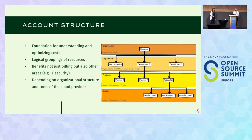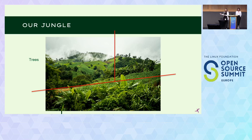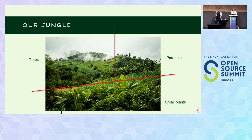Going back to our jungle — let's divide it into three areas. On the top left we have some trees; let's call that the tree area. On the right we have bushes and plants — let's call it the perennial area. And on the bottom we have weeds and small plants — let's call it the small plants area. So now, stranded in our jungle, you finally kind of know where you are when looking around — but you still don't know which of these plants you can eat or which trees you can use to build a house.